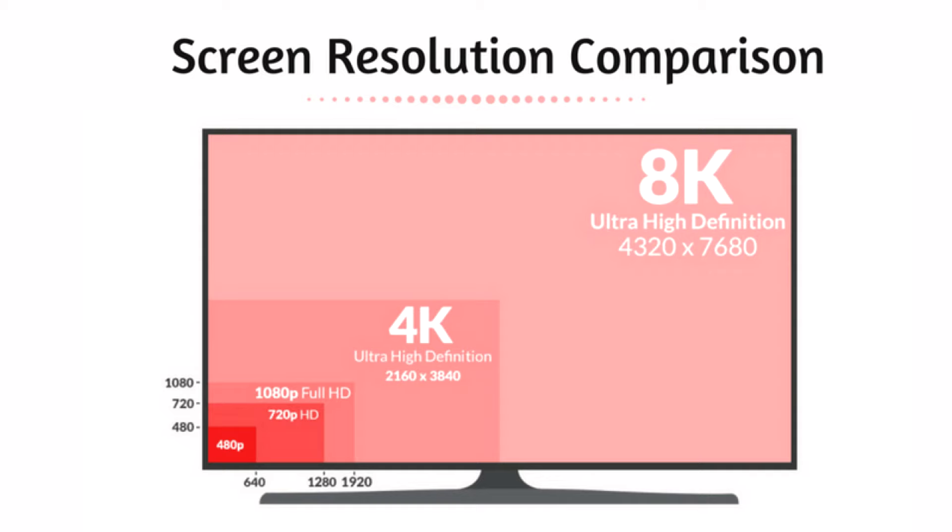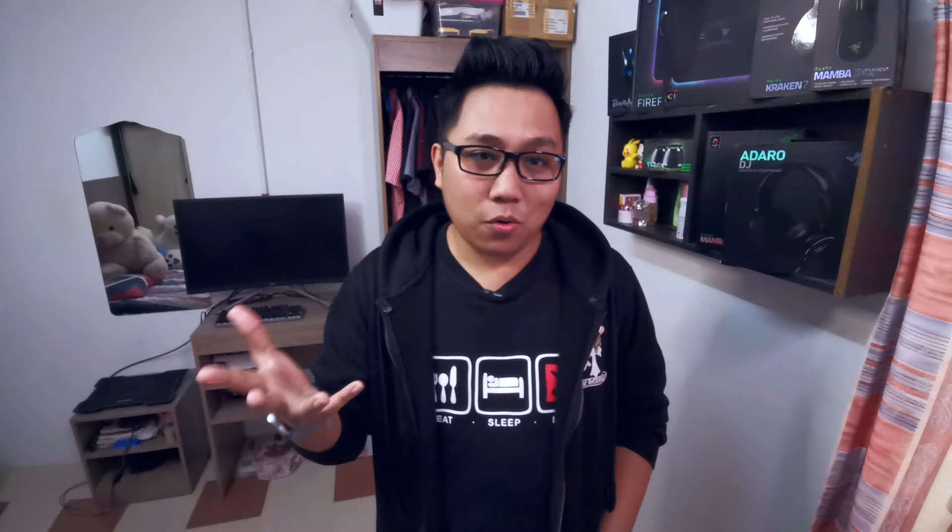Now I'm gonna assume that most of you know what resolution means. If not, don't worry because I'm gonna give you guys an overall idea of what resolution is and list down some of the widely used resolutions nowadays. The first one is 1080p, or 1920 by 1080. The second is 2K, or 2560 by 1440p. And the third one is 4K, which is 3840 by 2160.